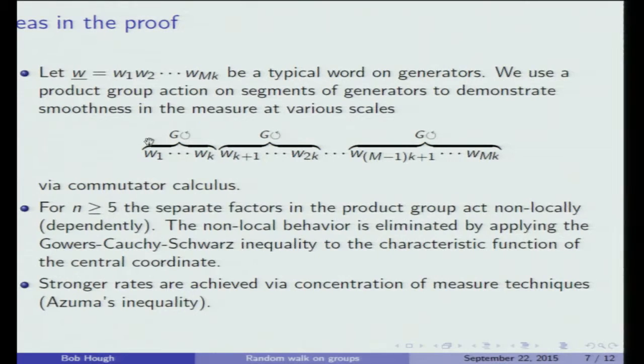I'll just give a few ideas in how the proof goes, just so you have a feel for types of ideas that go into this field, although this is just a subset of them. I take a typical word in my random walk, so you should think of W1 through Wmk as generators from the support of the measure, and I take a typical word like that, and then I cut it into pieces. On each of those pieces, I apply a permutation group action, so I rearrange the order.